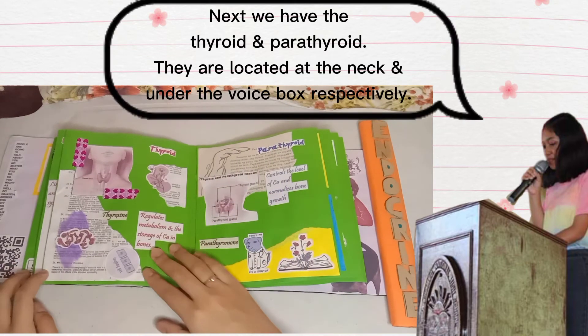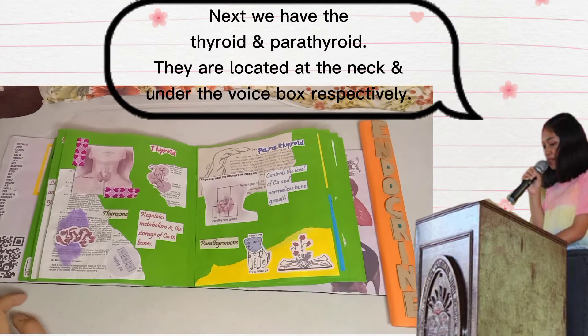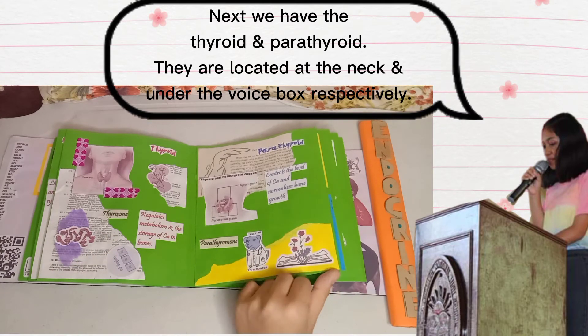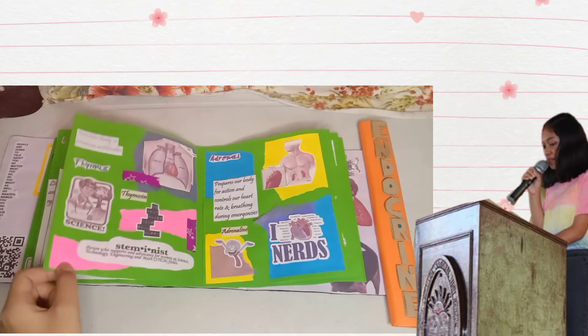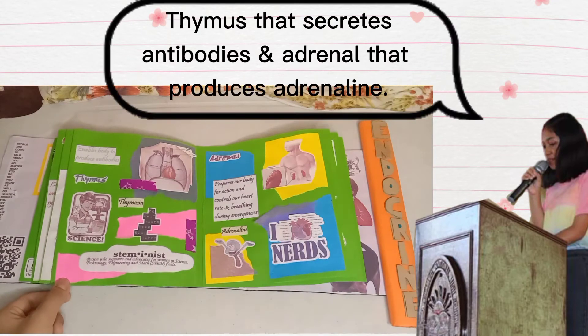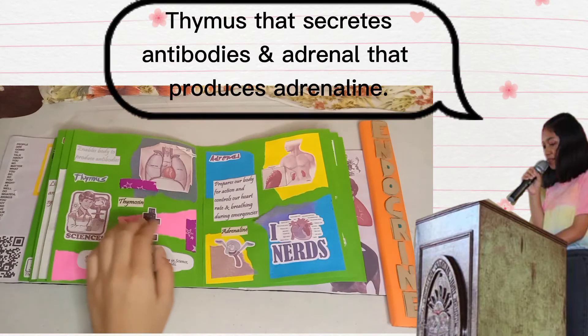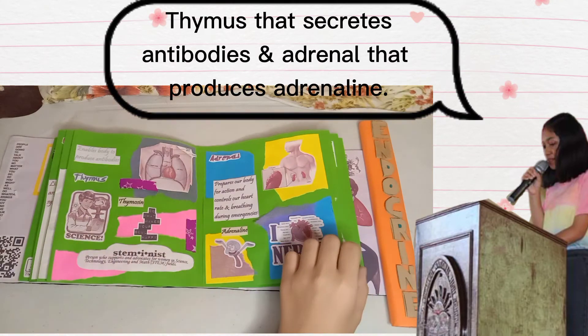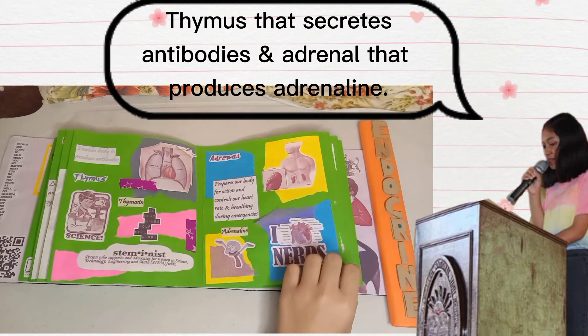Next we have the thyroid and parathyroid. They are located at the neck and under the voice box respectively. The thymus secretes antibodies, and the adrenal gland produces adrenaline.